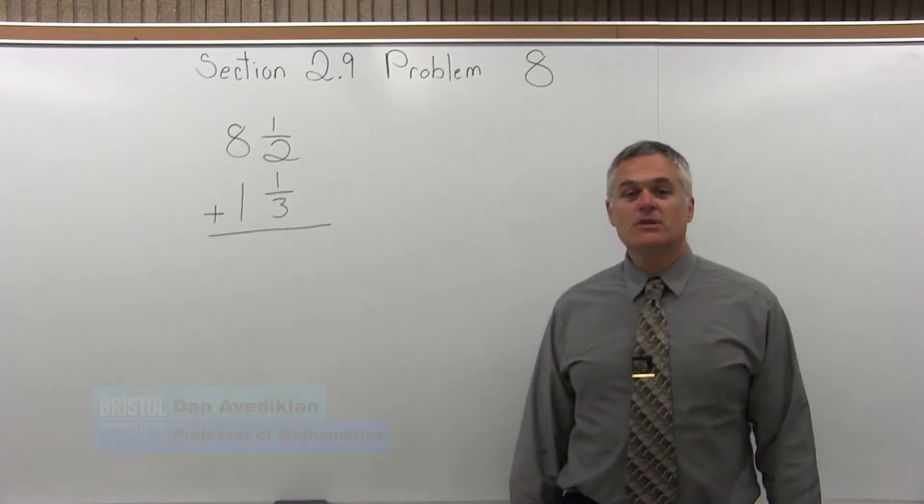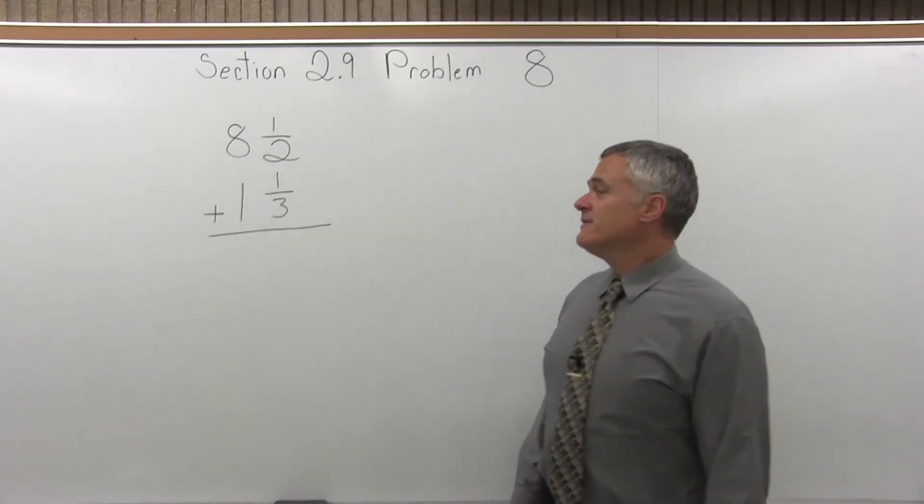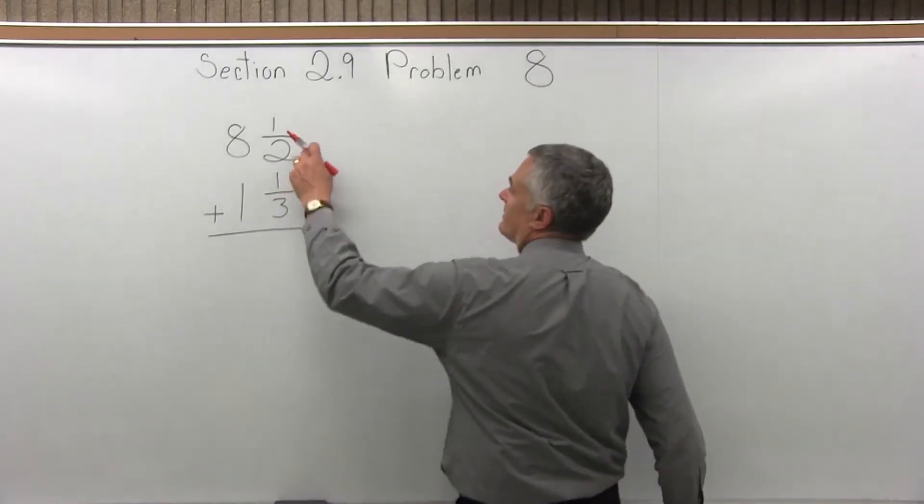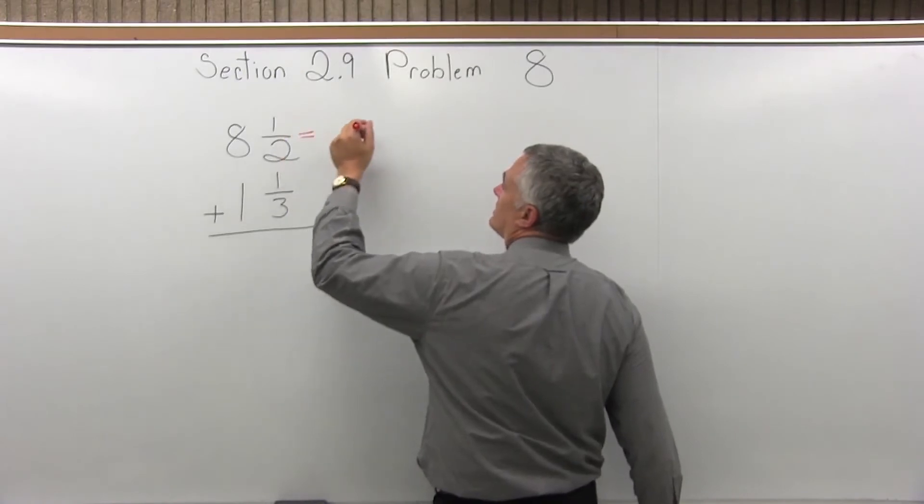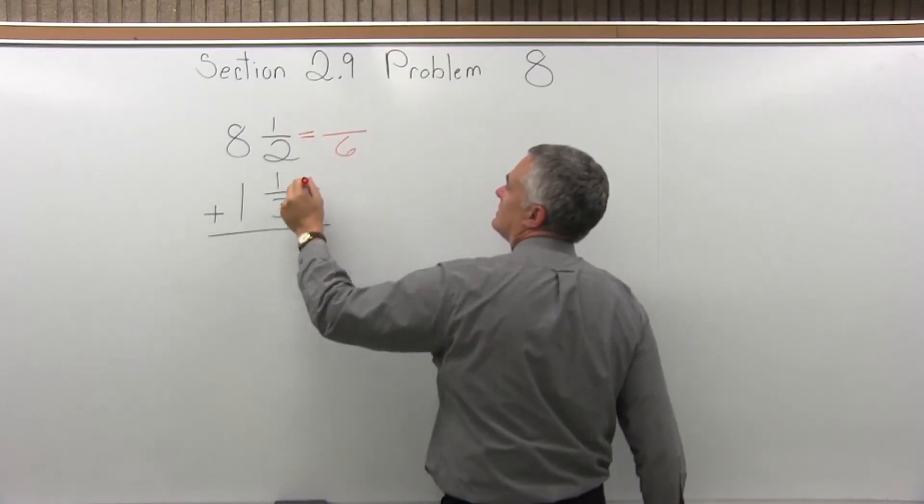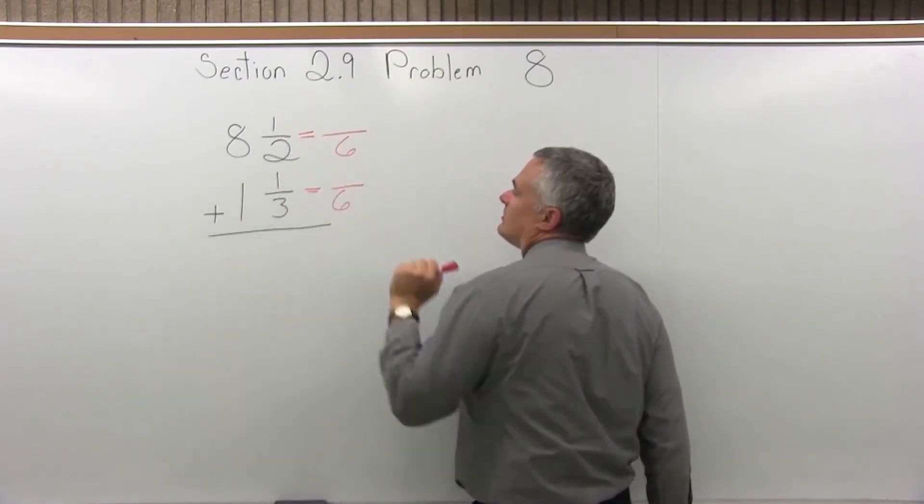We have to add 8 1⁄2 plus 1 1⁄3. So we need to find the common denominator. If I have a 2 and a 3, a good common denominator is 6. So we'll make them both something over 6.